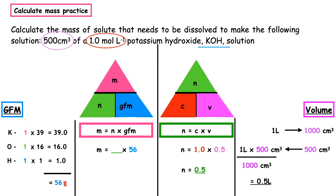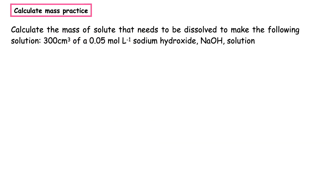We can now take that number of moles — 0.5 moles — and substitute it into our final equation. The mass is equal to 0.5 times 56. When you put that into your calculator you get a mass of 28 grams.